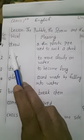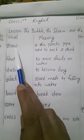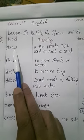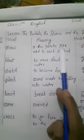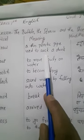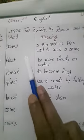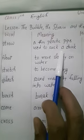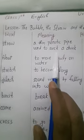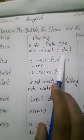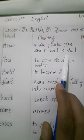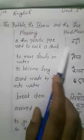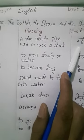Number one is 'straw.' What is a straw? A straw is a thin plastic pipe used to suck a drink — like cold drink or juice. We use a plastic pipe to suck the drink; that plastic pipe is called a straw.